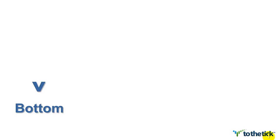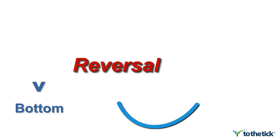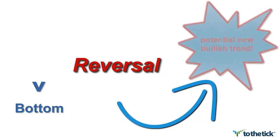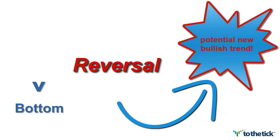Hello and welcome to today's tutorial brought to you by ToTheTick. Today's subject is the V-bottom. A V-bottom is a potentially very powerful reversal pattern and it can be seen in all markets, all time frames, and really any instrument including stocks. It's an unusual and very distinctive pattern structure, and one of the reasons is we're looking for that control of trend — watching the duel between buyers and sellers from the very first opportunity we might see a change or reversal.